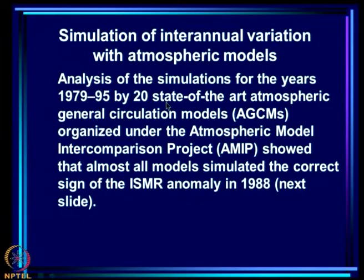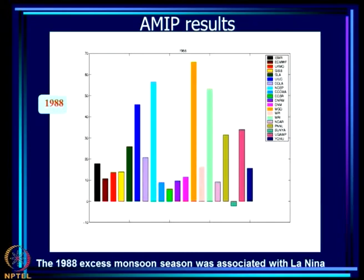Now let us look at the simulation of inter-annual variation with atmospheric models. Analysis of simulations for 1979 to 1995 by 20 state-of-the-art atmospheric general circulation models — AGCMs — organized under the Atmospheric Model Intercomparison Project AMIP showed that almost all models simulated the correct sign of the ISMR anomaly in 1988. The first question we ask is: at least is the sign of the ISMR anomaly captured when observed ISMR is an extreme? When observed ISMR is an excess, are models predicting a positive anomaly? When it is a drought, are models predicting a negative anomaly?